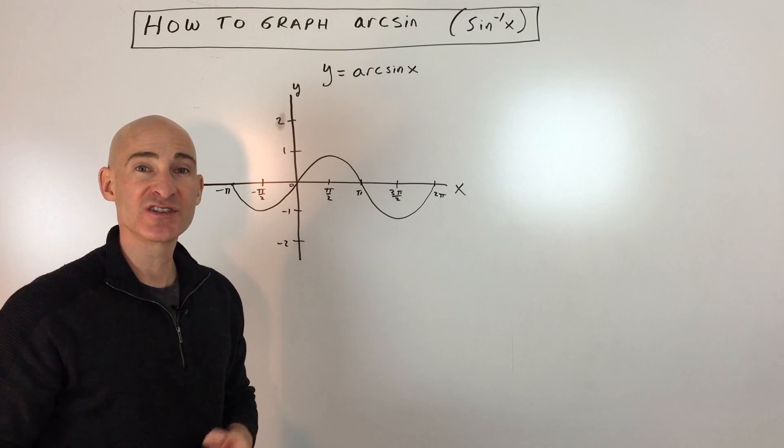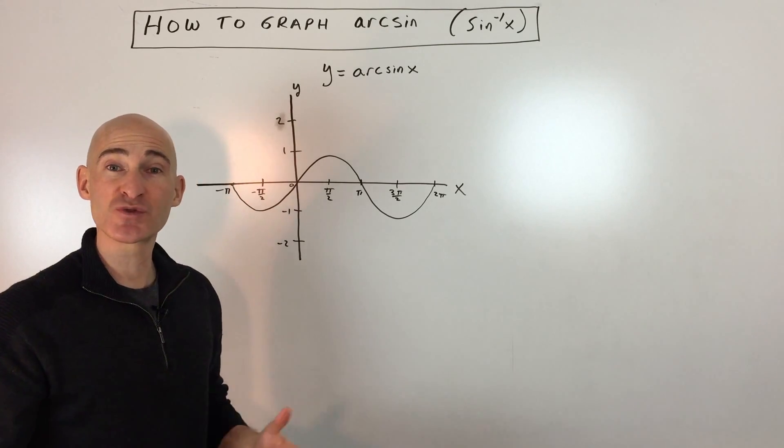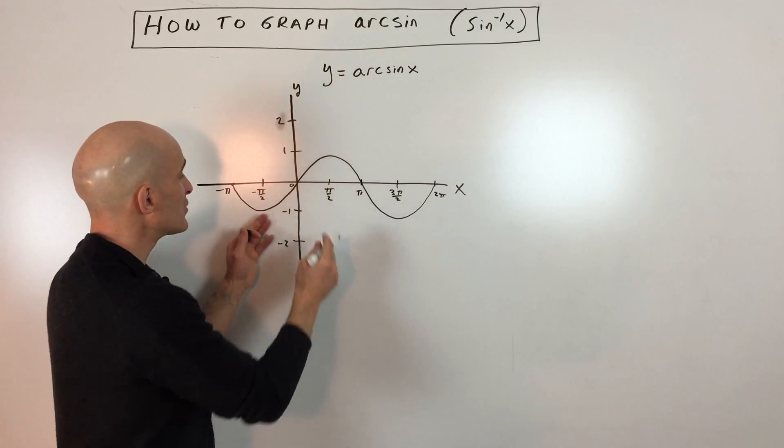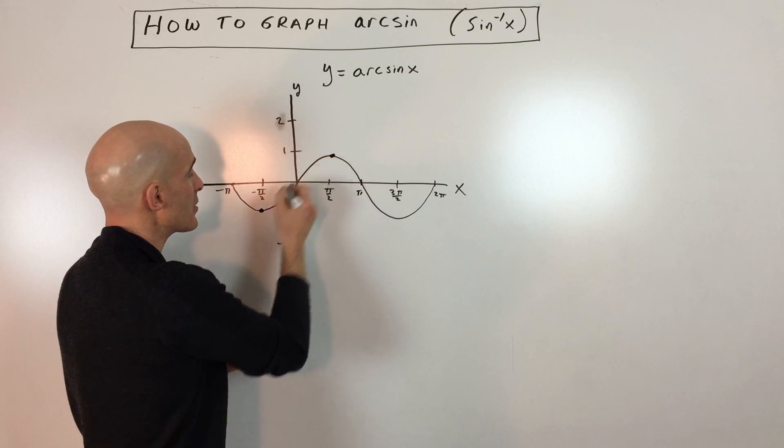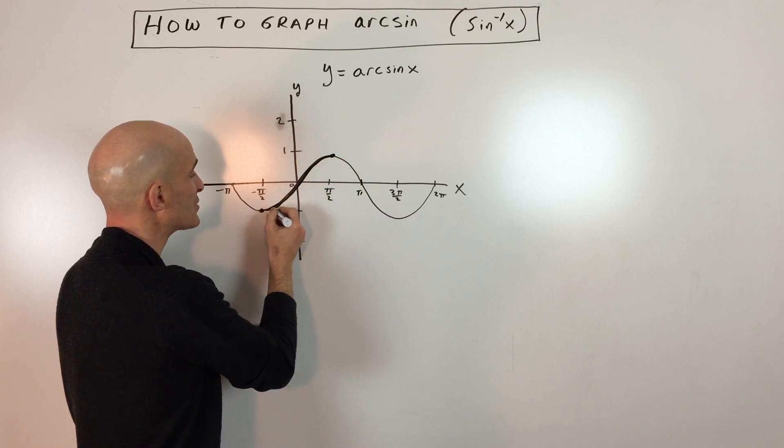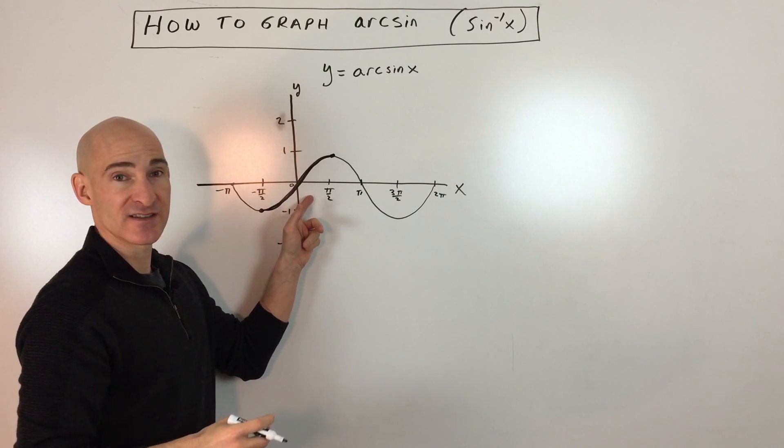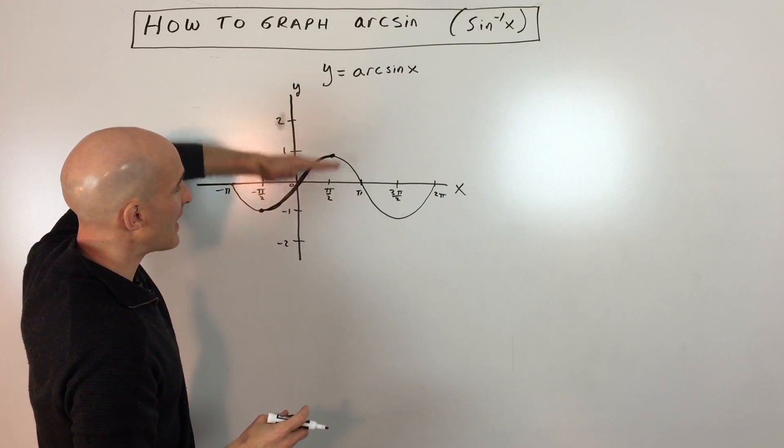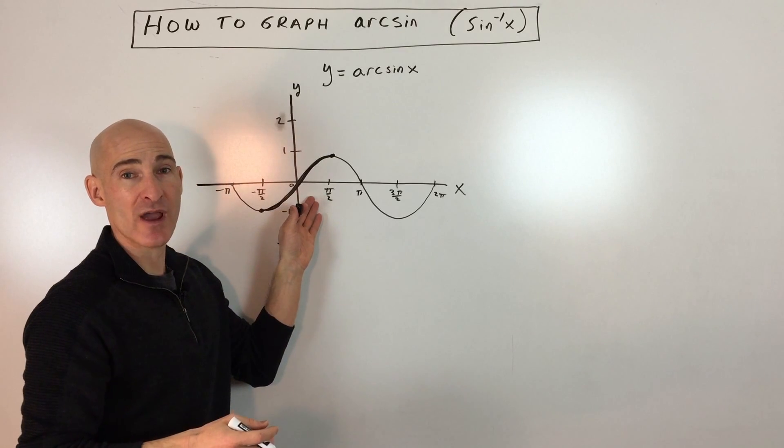What mathematicians decided to do to get around the fact that it's not a function is to restrict the domain. When you restrict the domain, we're just going to look at it from here to here, just this part of the graph. Now you can see it passes the vertical line test. This is a function. It passes the horizontal line test, meaning it doesn't cross more than once. So the inverse of this graph is a function.